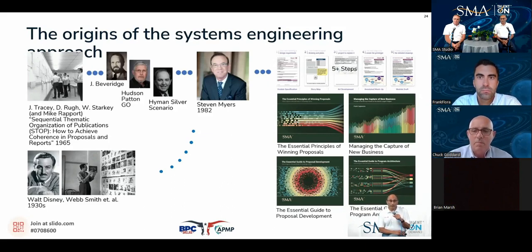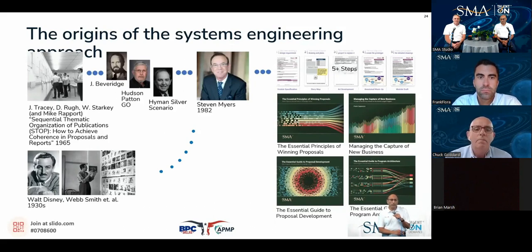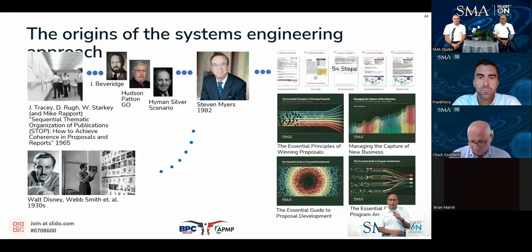Now where did this come from? Hyman Silver was a giant in the field and perhaps to this day somewhat undervalued. What his team at Rockwell did with the Space Shuttle and Space Station Phase B wins was really innovative — it's a casebook study of how to win large, complex programs. Both Steve Myers and Steve Shipley really built on Hyman's ideas.